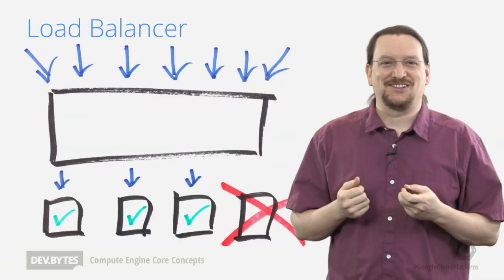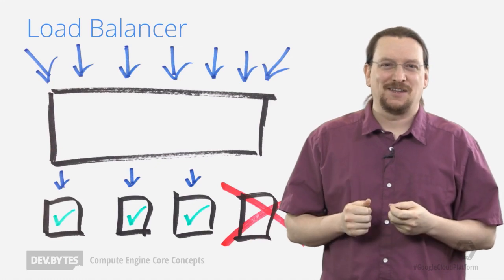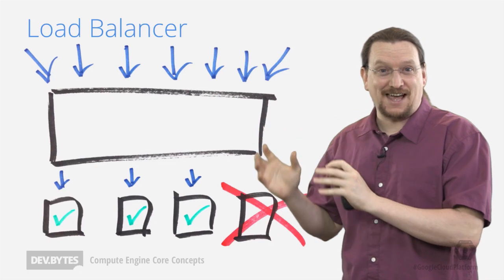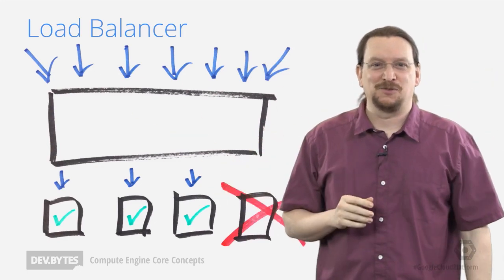The Compute Engine Load Balancer is Google's network level distributed load balancer, bringing packets directly to your virtual machines. So you've got a pool of virtual machines, and Google's infrastructure balances the load to all of those machines.